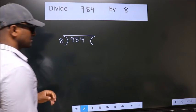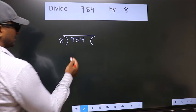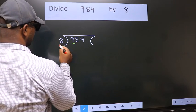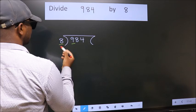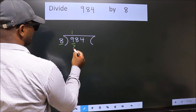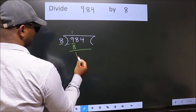This is your step 1. Next, here we have 9, here 8. A number close to 9 in the 8 table is 8 once 8. Now, we should subtract. We get 1.